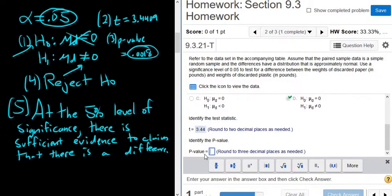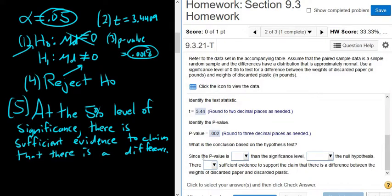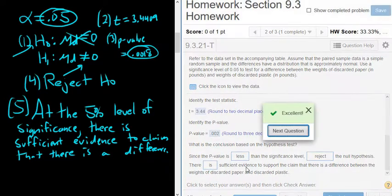The p-value is, three decimals. Be really careful here. So this 8 is going to round that 1 to a 2. So 0.002. It's a really easy place to mess up. I've messed up there plenty of times. Since the p-value is less than the significance level, we reject the null hypothesis. And there is sufficient evidence to support the claim that there is a difference between the weights of discarded paper and discarded plastic.